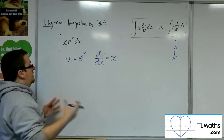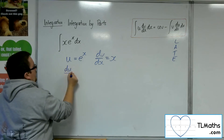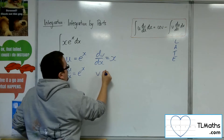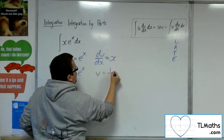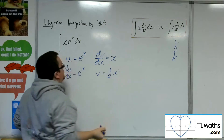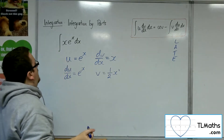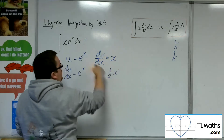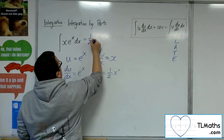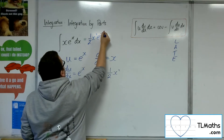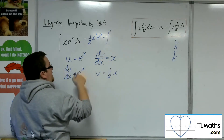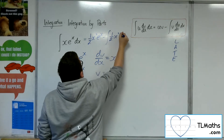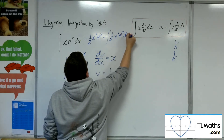Should it make a difference? Let's see. So du by dx will be e to the x, and v will be the integral of x, so one half x squared. So what would happen? Well, I've got u times v, so using the formula uv: one half x squared e to the x, take away the integral of v times du by dx — so the integral of one half x squared e to the x dx.